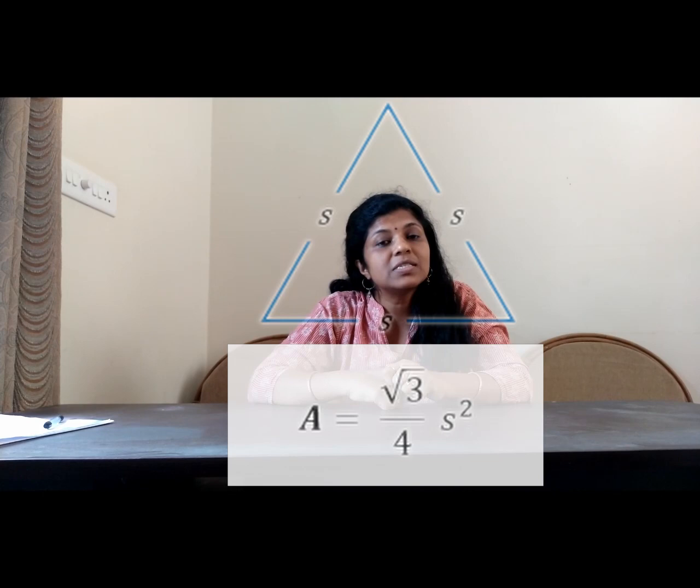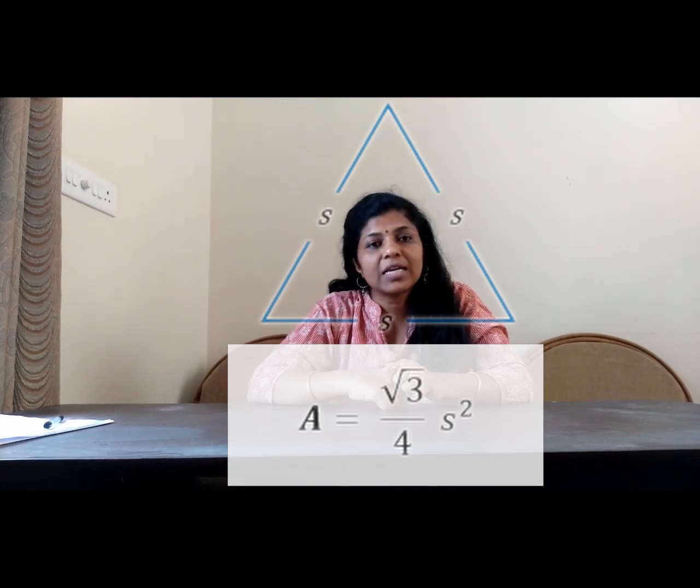Next is equilateral triangle. Equilateral triangle, all the sides are equal. Therefore, A is same. We can use the formula root 3 by 4 into that side square.